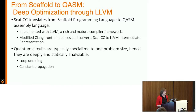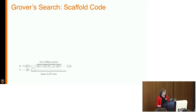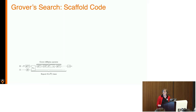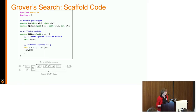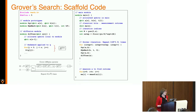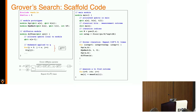The optimizations we lean heavily on are things like loop unrolling and constant propagation. As one example, one of the long-standing algorithms in quantum computing is Grover's search algorithm, depicted here in a circuit diagram at the bottom. The Scaffold code here is essentially the Scaffold expression of Grover's search algorithm, with a set of iterations that correspond to this iterative process.